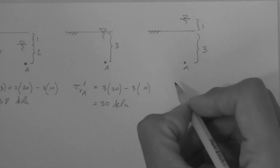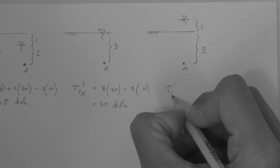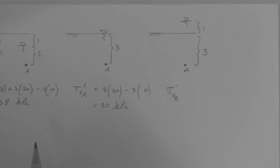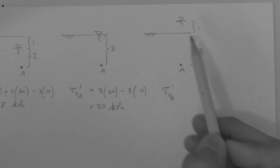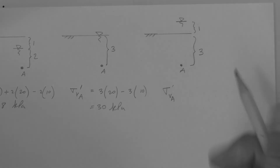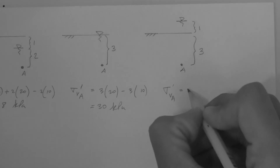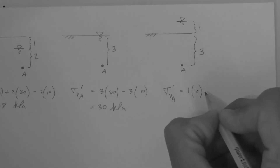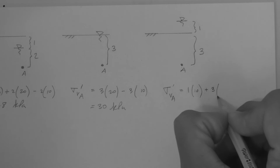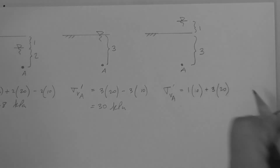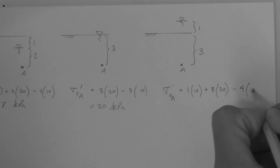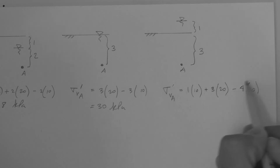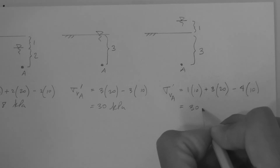For the third profile, the vertical effective stress at point A is calculated as follows. We're going to treat the water above the ground surface as a layer made of water. So we have one meter of water plus three meters of saturated soil minus four meters of water — this is the pore pressure. This is 30 kPa.